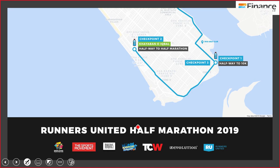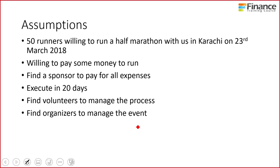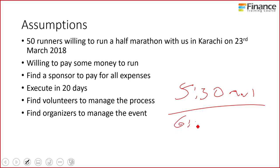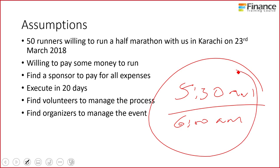Case number one — you've seen this before — is Runners United half marathon. What are the assumptions? In this specific instance, the assumptions are: can we get 50 runners willing to run a half marathon with us in Karachi? Are they willing to pay some money to run? Can we find a sponsor to pay for all these expenses? Can we execute in 20 days? Can we find volunteers to manage the registration and organization? Can we find organizers to manage the event on the day? And registration starts at 5:30 AM, first race starts at 6 AM sharp.